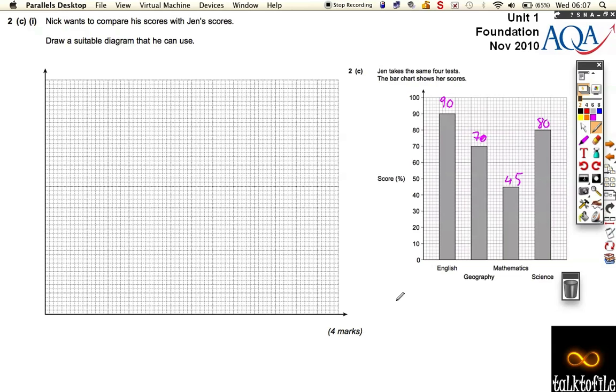Now that compares with Nick's scores. In English he scored 60%, Geography 50%, Maths 90% - he did much better, and in Science 40% - he did much worse. Nick wants to compare his scores with Jen's scores. Draw a suitable diagram he could use. Well if there's a bar chart here we could use that, but we need to put Nick's scores on it as well.